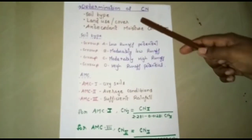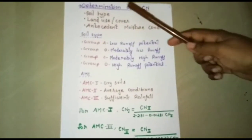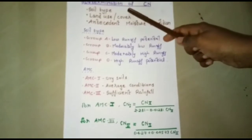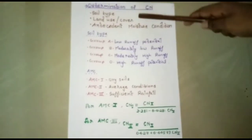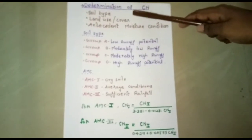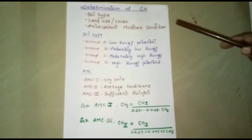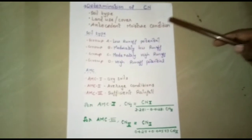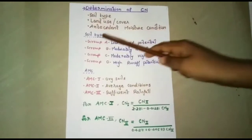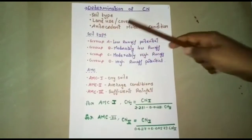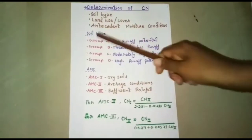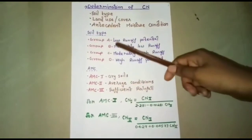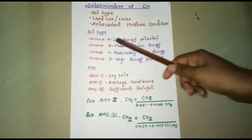Next is the determination of CN. It is based on three factors: soil type, land use or land cover, and antecedent moisture condition.